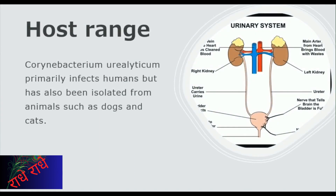Coronybacterium ureoliticum primarily infects humans, but it has also been found in animals such as dogs and cats. This suggests that the bacterium may have zoonotic potential, meaning it can be transmitted from animals to humans or vice versa. Therefore, it is important to take precautions when handling animals that may be infected with the bacterium. Additionally, further research may be needed to understand the potential impact of the bacterium on animal health.